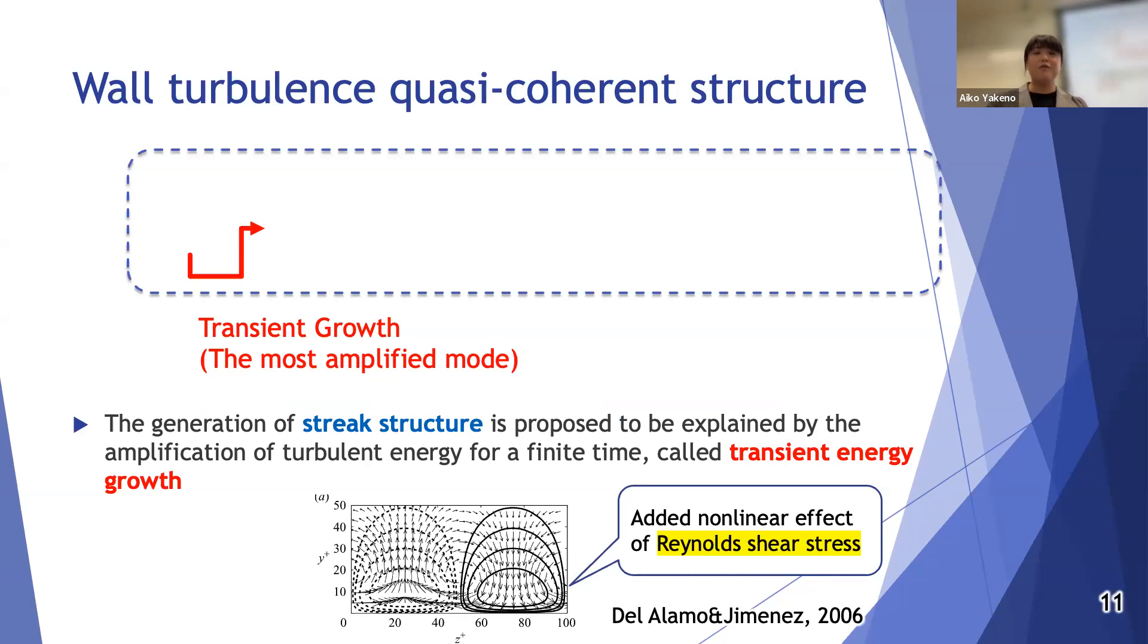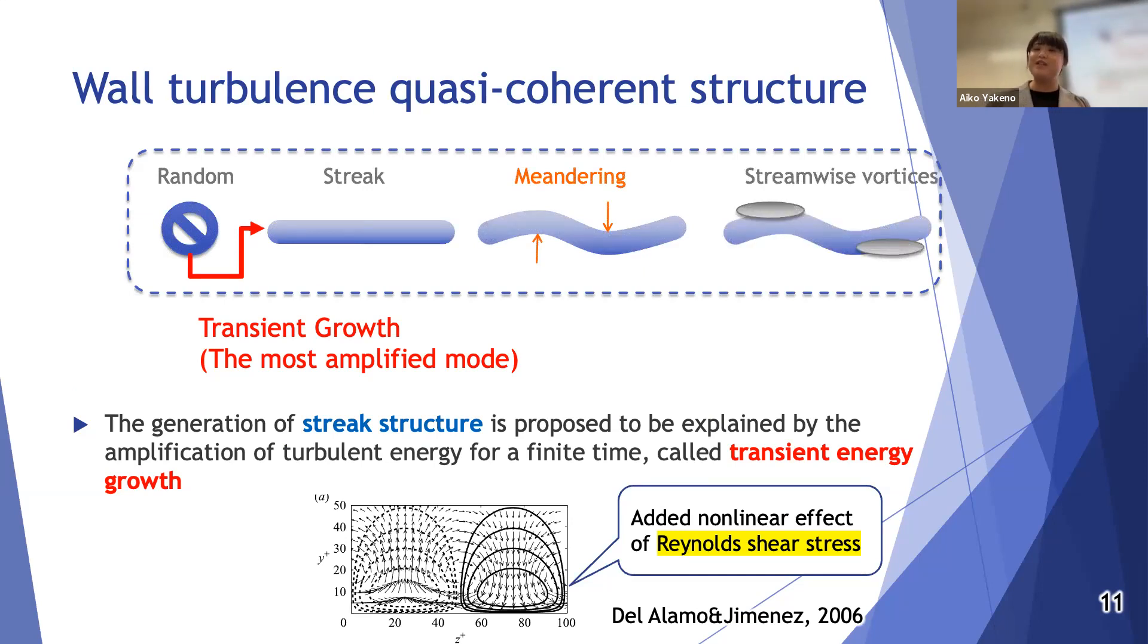First I would like to explain the background. This is maybe something like preaching to Buddha. Everyone knows about the self-sustaining and regeneration cycle of wall turbulence consisting of the streak structure generation and meandering, then streamwise vortices occurring. The streamwise vortex generates Reynolds shear stress near the wall and is the main cause of frictional drag in turbulence.